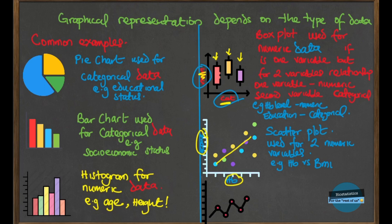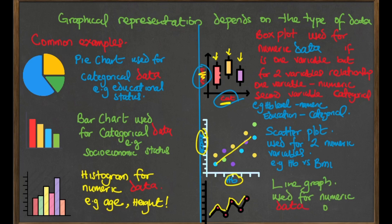The line might go up, then down, then up again, then down — showing an upward or downward trend over time from 1990 to 2022. It's called a line graph. It's used for numeric data and it shows how data is distributed over time.